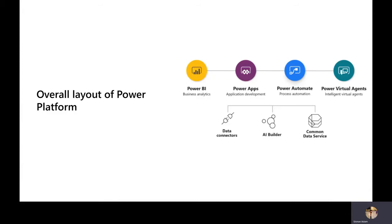The common key components of the Power Platform are three things: data connectors, AI Builder, and Common Data Services. Data connectors are like extensions — you take one service and connect it to another. Think of power extensions where you connect devices to a main outlet; same concept here. You connect one service to another, creating an environment where people can make their work easier.